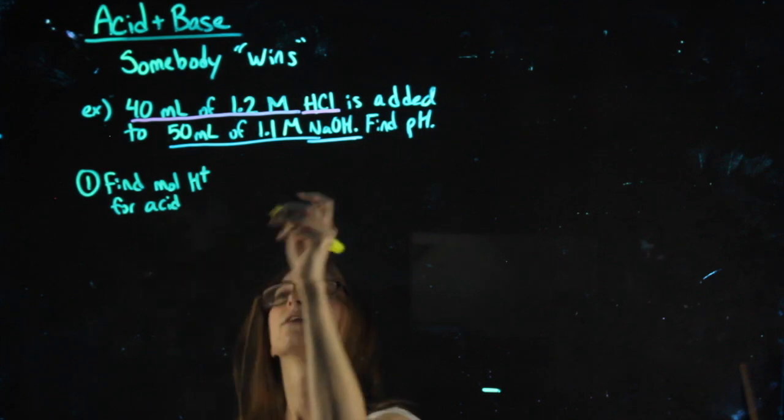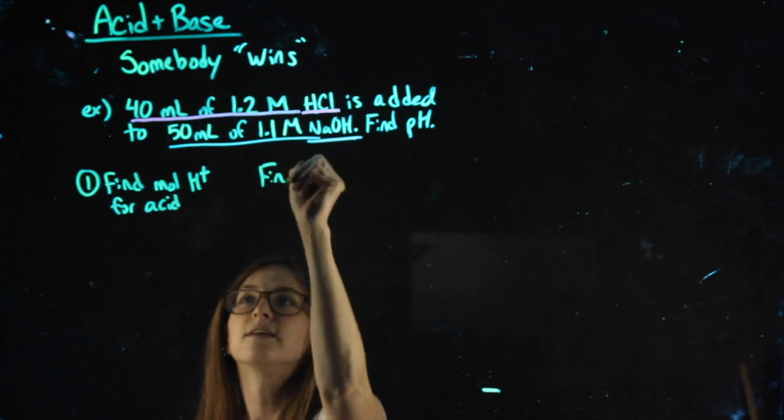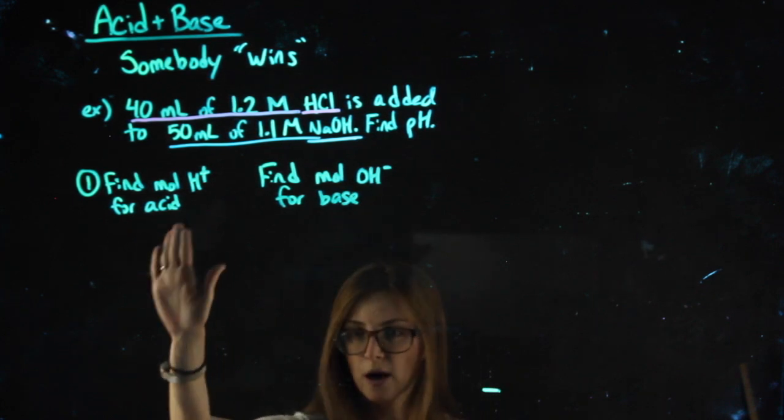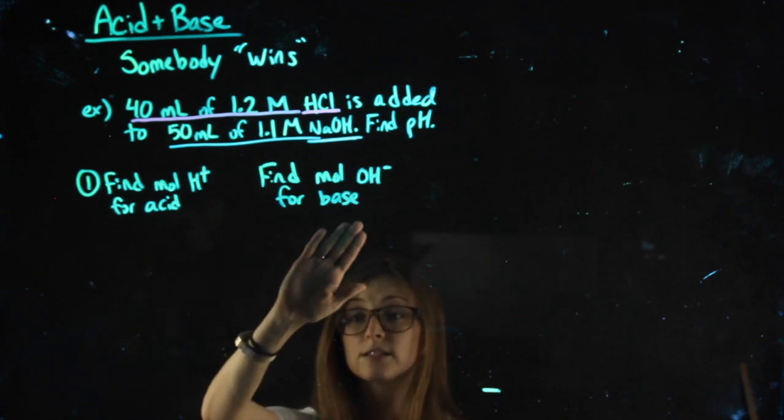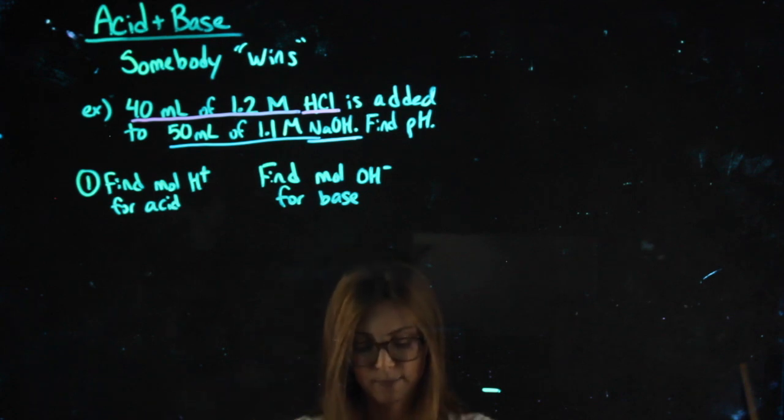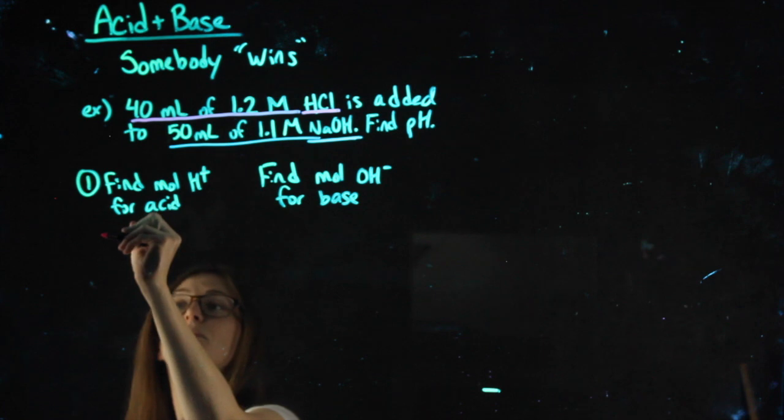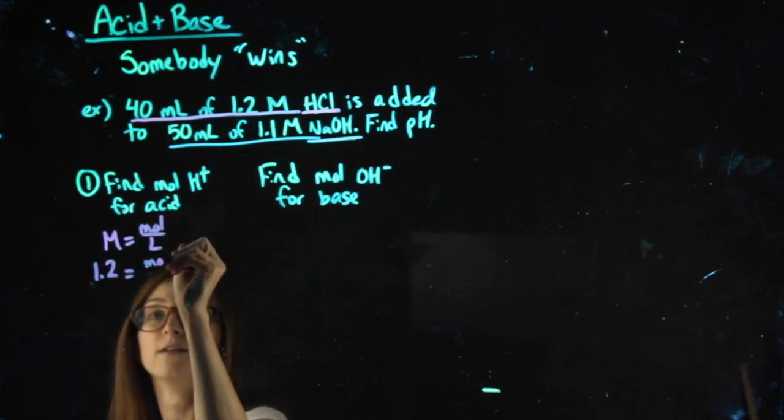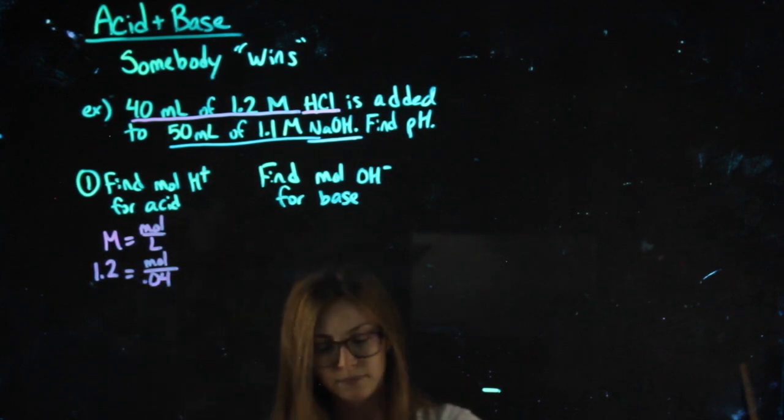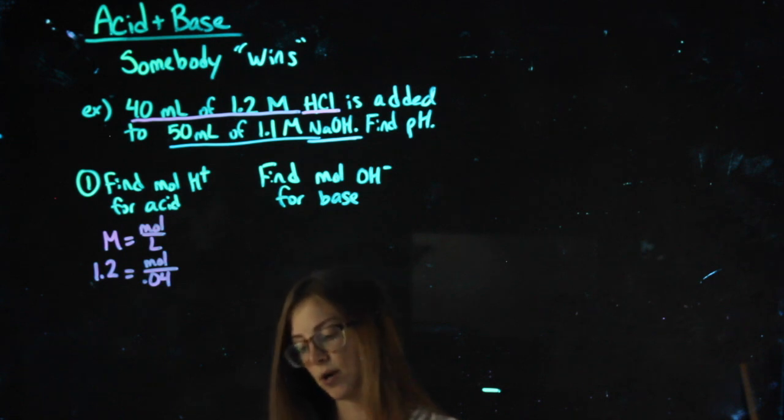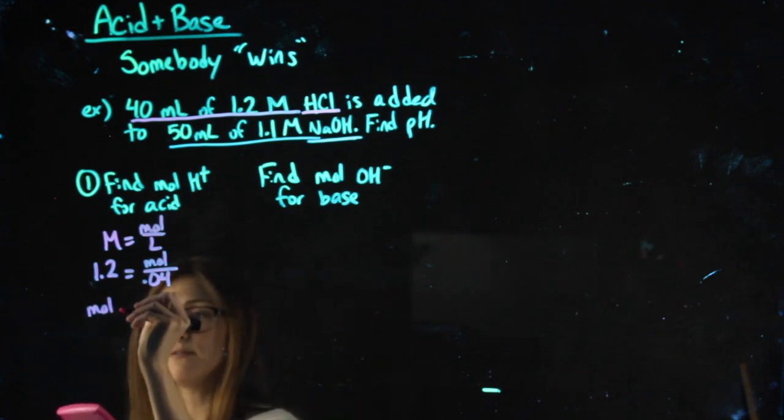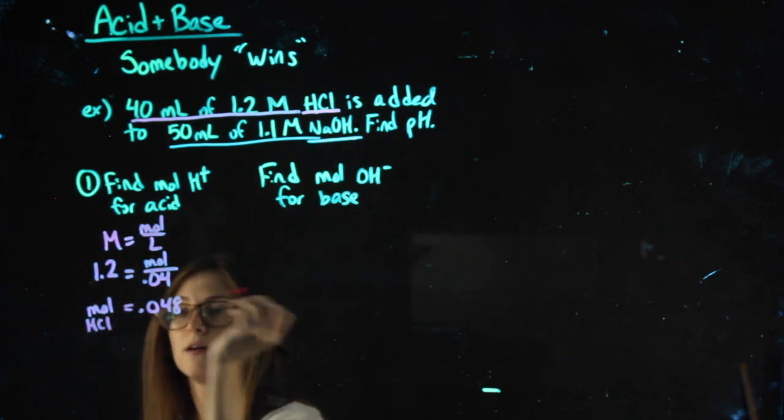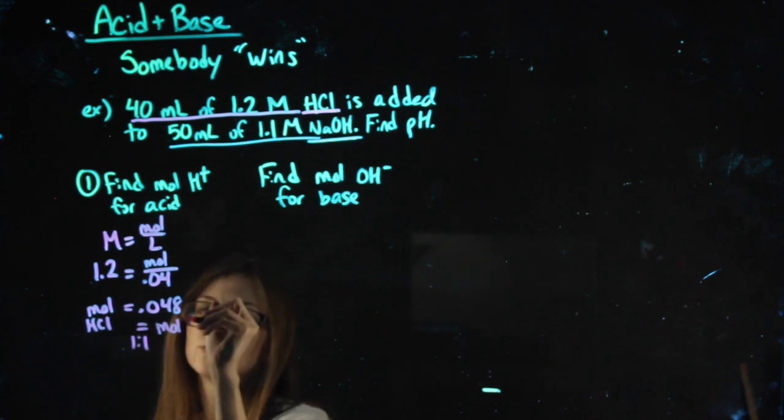For acids, we care about H+. With acids, it's always going to be that one-to-one ratio, so it should be pretty straightforward. For the acid, I have molarity and volume, so I can use molarity equals moles over liters using the molarity of my acid and the liters, meaning I have to convert. When I multiply 1.2 times 0.04, what I found the moles of is whatever I had the molarity of, which is the HCl. But because of a one-to-one ratio, this is also my moles of H+.